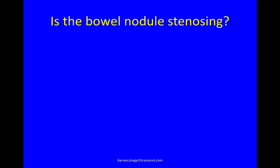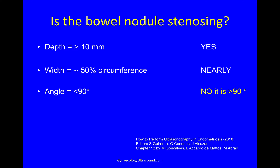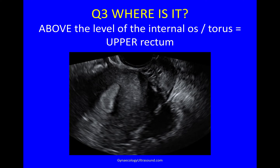So is this nodule stenosing or not? We've got some surrogate markers. If the depth is more than 10 millimetres — yes. Is it half the circumference of the bowel? Nearly. Is the angle less than 90 degrees? No, it's more. So this is the chapter in a book that recommends these surrogate markers — it's really good. And so I think this bowel nodule is less likely to be stenosing. I'm not saying it isn't, but it's less likely to be so.